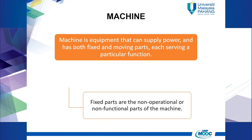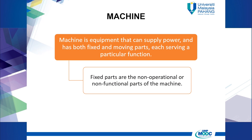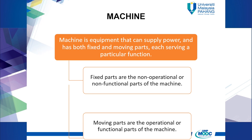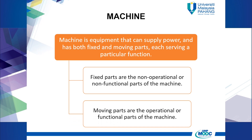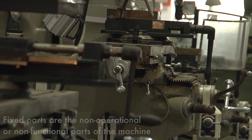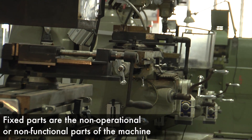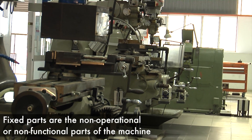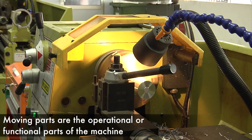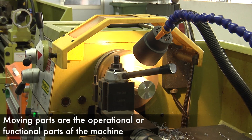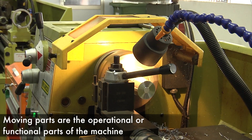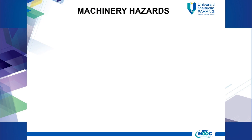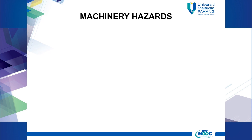Do you know what a machine is? A machine is equipment that can supply power and has both fixed and moving parts, each serving a particular function. Fixed parts are the non-operational or non-functional parts of the machine, meanwhile moving parts are the operational or functional parts of the machine.